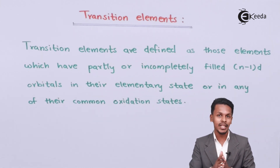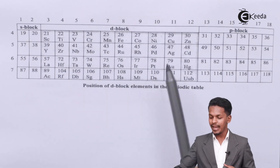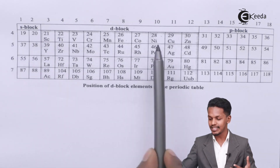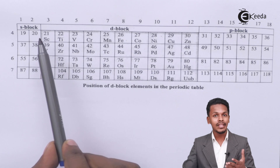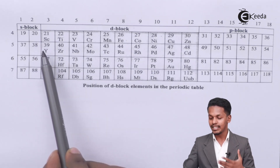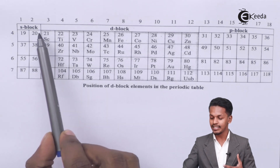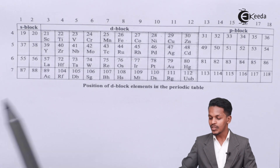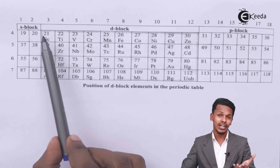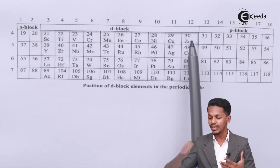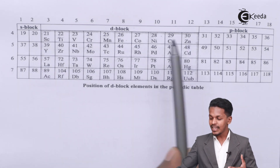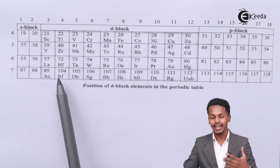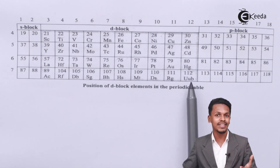To understand this with examples, let us look at the periodic table. For d-block elements, it starts with scandium, belonging to the 3d series — named so because it ends with the 3d orbital. Similarly, we have the 4d, 5d, and 6d series. The series ranges from scandium to zinc, and from actinium through roentgenium ending with copernicium (Cn).